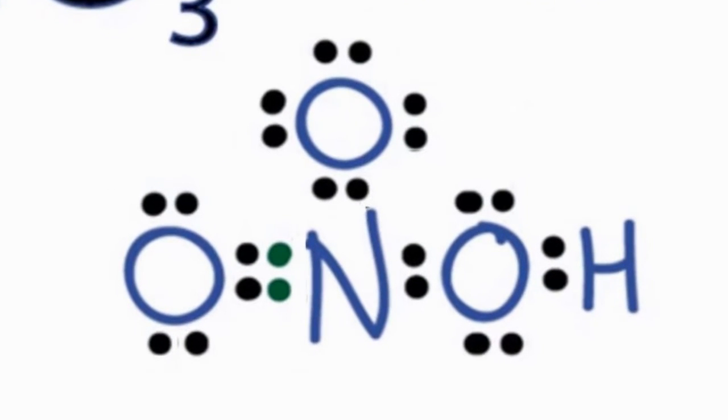When you look at the Lewis structure here, you can see it's not symmetrical. We have that hydrogen on this side here, and then we have the oxygens on the other side. It's not a symmetrical molecule, and that means it's probably going to be a polar molecule.